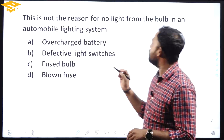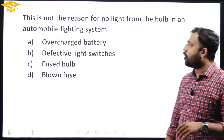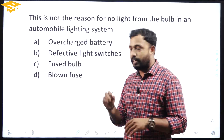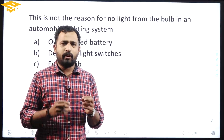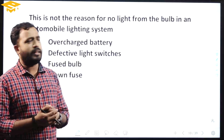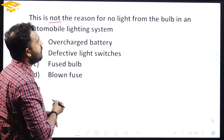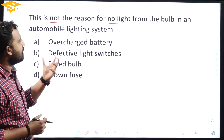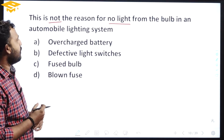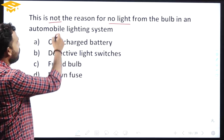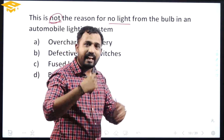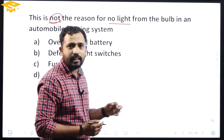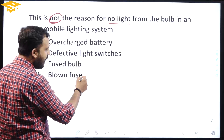This is not the reason for no light from the bulb in an automobile lighting system. We will talk about the question and the theory. We are going to talk about what is not the reason for no light. The reason: if the fuse will blow, the bulb will go out. This is the correct answer.